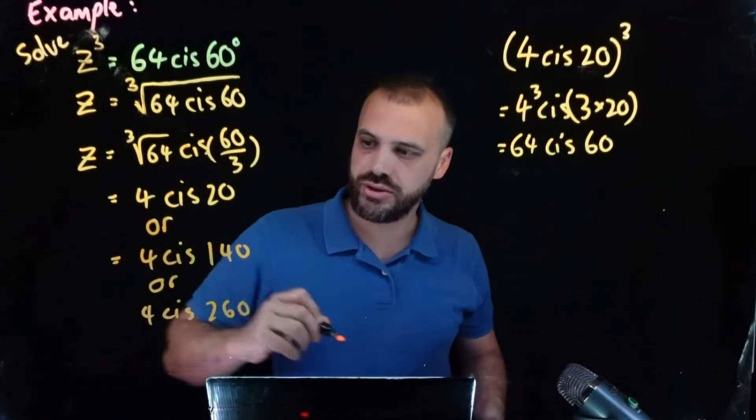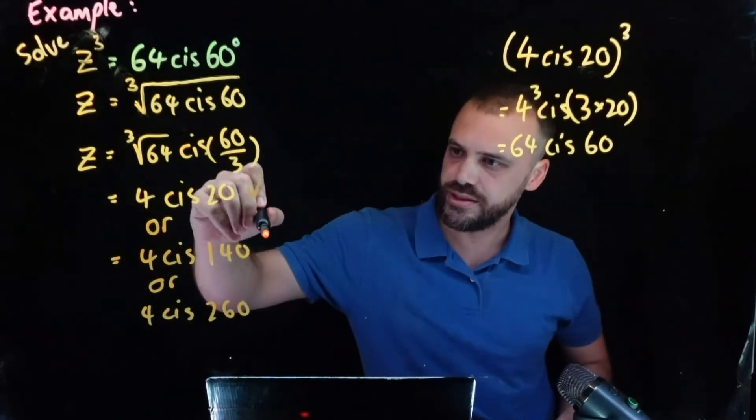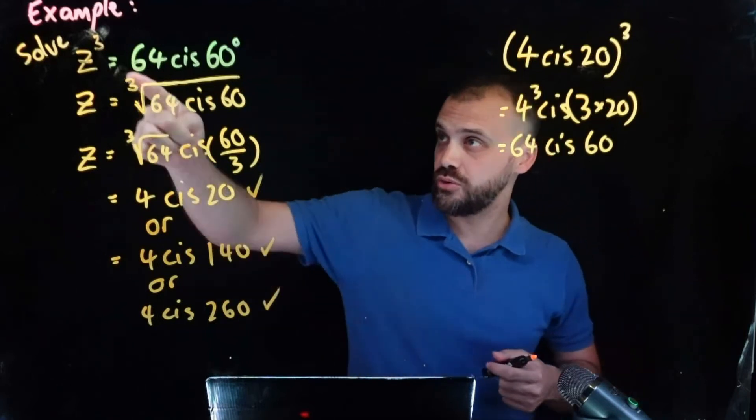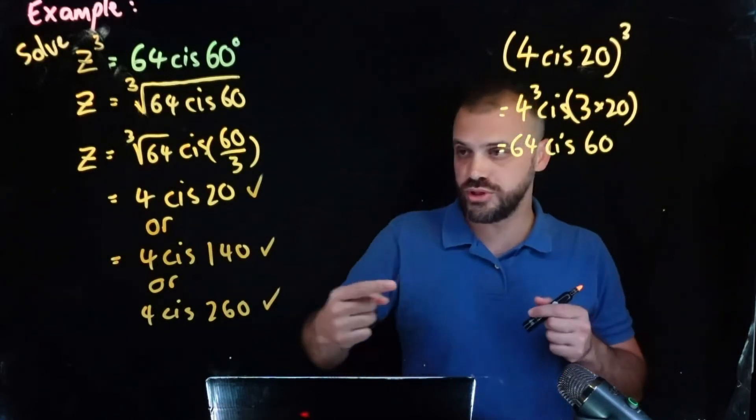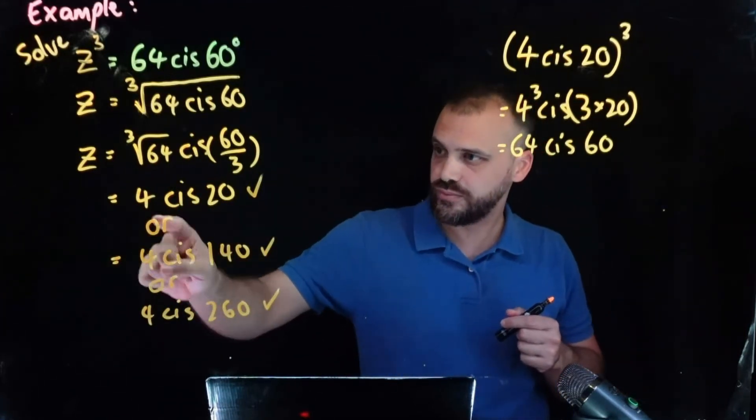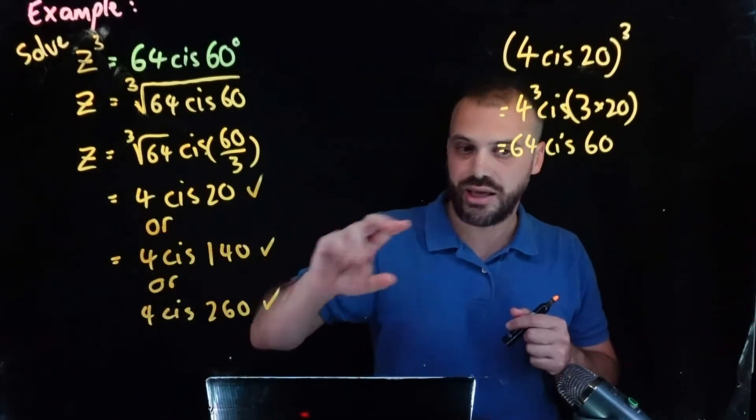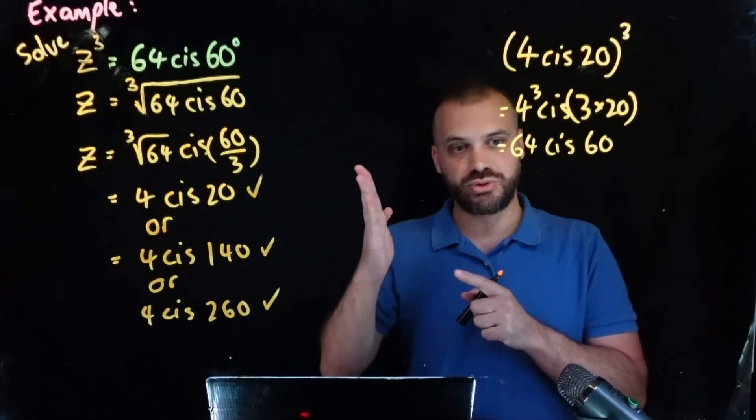So we have four cis 20 or four cis 140, so that's 120, or four cis add on another 120 to that and we get 260. So we have three solutions when we find the cube root and those are all same modulus and equal angles apart, 120, 120.